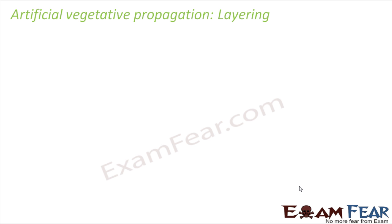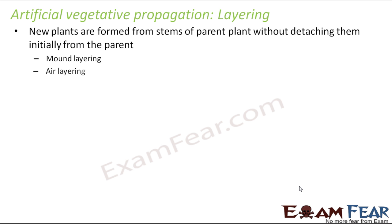The second method of artificial vegetative propagation is layering. Here, new plants are formed from stems of the parent plant without detaching them initially from the parent. Like in cutting, the stem or root of the plant was cut and separated from the parent plant and then planted in soil where it gave rise to new plants. But in layering we will help in producing new plant from the stem but we will not separate the stem from the parent plant initially.